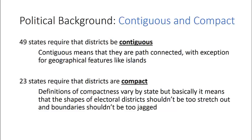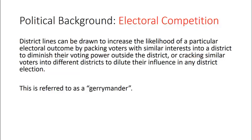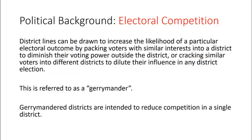Fourth on our list is electoral competition. District lines can be drawn to increase the likelihood of a particular electoral outcome by packing voters with similar interests into a district to diminish their voting power outside of that district, or cracking similar voters into different districts to dilute their influence in any particular district election. This is referred to as a gerrymander. Gerrymandered districts are intended to reduce the competition in a single district. Let's look at a couple of really famous districts that are known as two of the worst gerrymandered districts in the country.